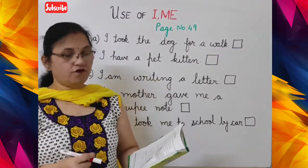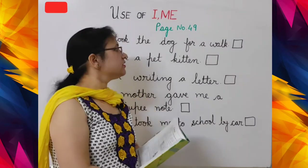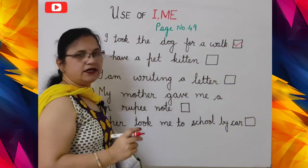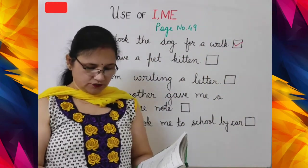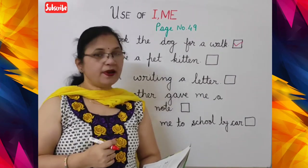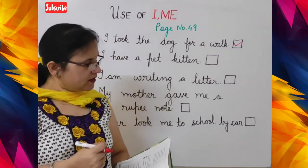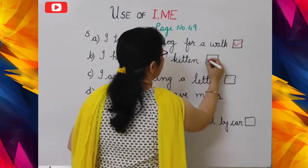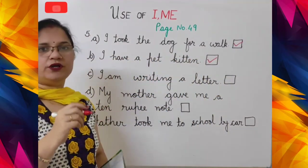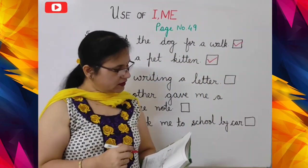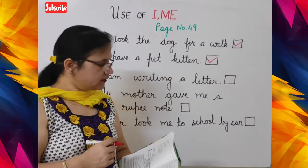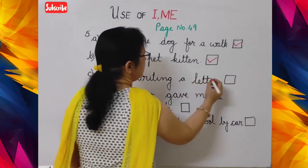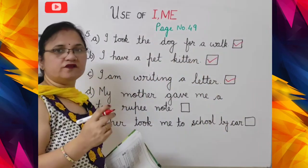'Me took the dog for a walk' — this is wrong. The correct sentence is 'I took the dog for a walk'. Put a tick in front of that sentence. Next: 'I have a pet kitten' is correct; 'Me have a pet kitten' is wrong. Put a tick in front of 'I have a pet kitten'. Next: 'I am writing a letter' is correct; 'Me is writing a letter' is wrong. Put a tick in front of 'I am writing a letter'.